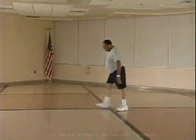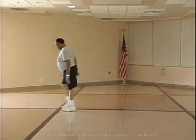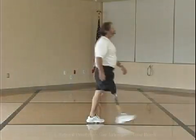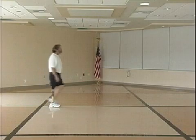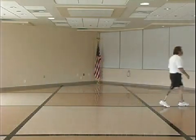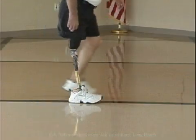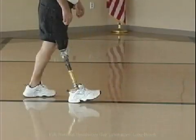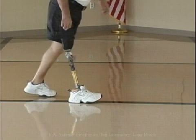A short forefoot lever arm is perceived by the individual as a sense of drop-off or falling into a hole at the end of stance phase. It may also be a result of excessive dorsiflexion of the prosthetic foot, which requires the person to compensate by positioning the knee posterior to the weight line in order to achieve stability.